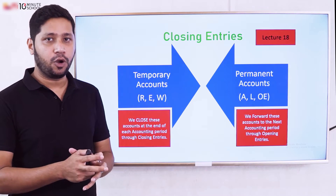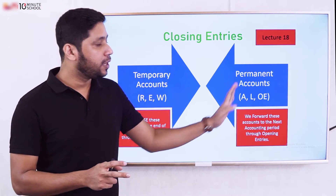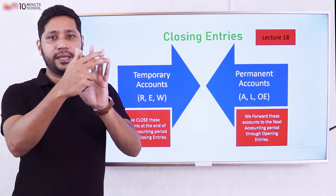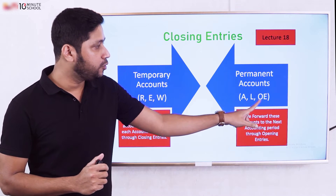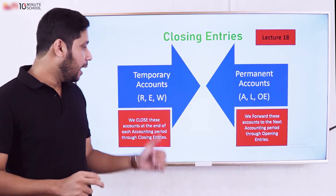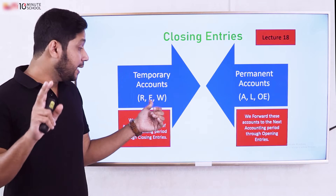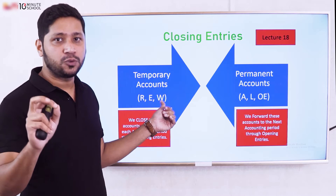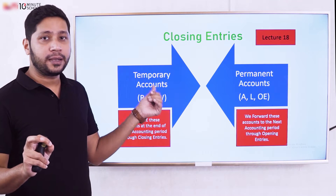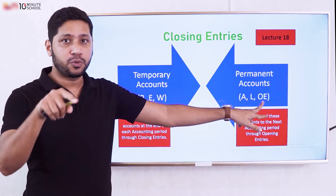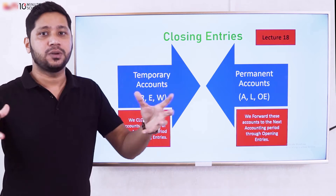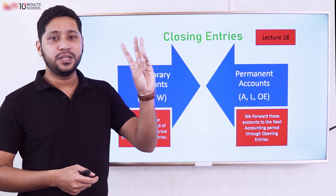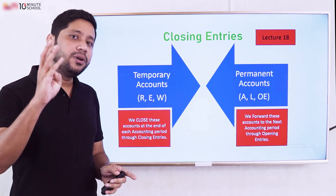In accounting, there are two types of accounts: temporary accounts and permanent accounts. The permanent accounts are asset, liabilities, and owner's equity. The temporary accounts are revenue and expense. Asset, liabilities, and owner's equity are permanent accounts; revenue and expense are temporary accounts.